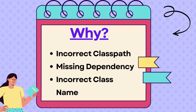The second reason could be a missing dependency, which is similar to the first. If the class the JVM is trying to load depends on another class that is not available in the classpath, this exception will also be thrown. We need to make sure all required dependencies are present and accessible during runtime.